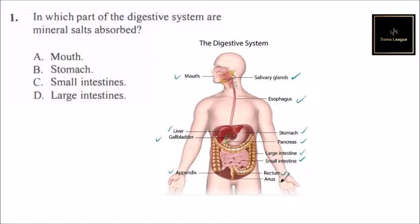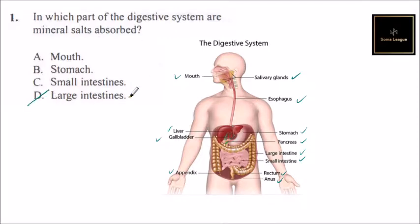We have the rectum and the anus — that is the digestive system. To answer this question, the correct answer is that mineral salts are absorbed at the large intestine.